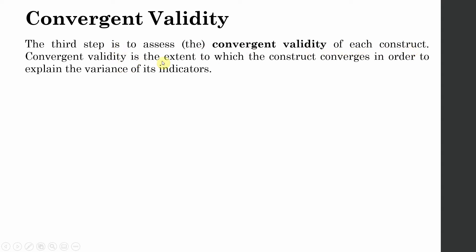Convergent validity is the extent to which the construct converges in order to explain the variance of its indicators, or in simpler terms, whether the indicators are representing the underlying construct or not.